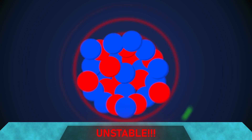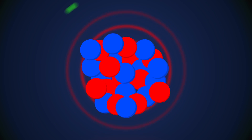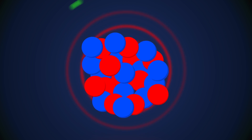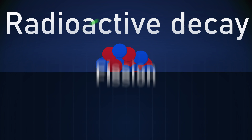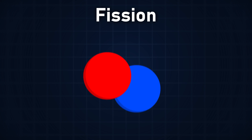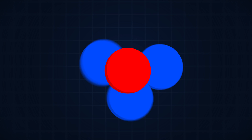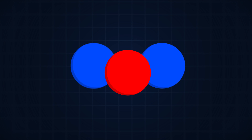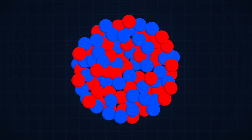Unstable nuclei will try to reach a stable level of energy by emitting protons or neutrons until they are stable. Such nuclei are radioactive until they have emitted enough particles to be stable. This phenomenon is called radioactive decay and is a type of fission. Fission refers to when the nucleus of an atom is split in half — this can happen spontaneously during radioactive decay, but there is a more interesting type of fission that can happen.